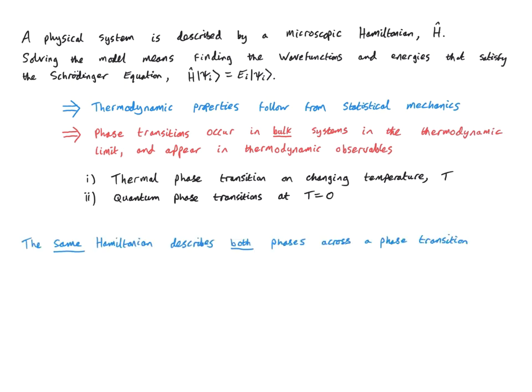The puzzle is that it is the same Hamiltonian that describes both phases across a phase transition — it's just that we end up with a different thermodynamic phase depending on the temperature or some model parameter. The Hamiltonian controls the symmetries of the system; they're encoded on the level of the Hamiltonian. So if the same Hamiltonian describes different phases, we would expect the different phases to have the same symmetries. But as I argued, the symmetry often changes across a phase transition. Let's unpack this in a little more detail.